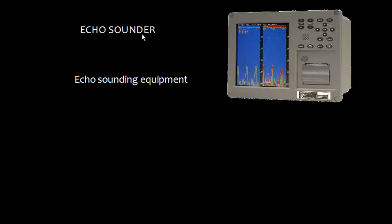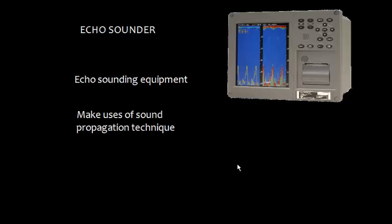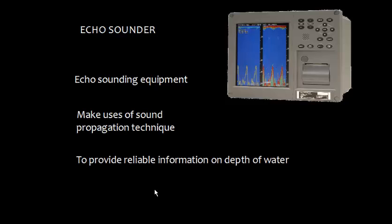Echo sounder is also known as echo sounding equipment. In order to navigate safely, one of the prime concerns is to know the depth below the ship. Echo sounder is designed to provide reliable information on depth below a ship, basically to aid navigation. This makes use of sound propagation technique, which will be discussed later.